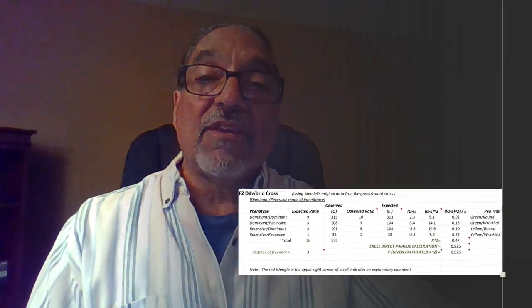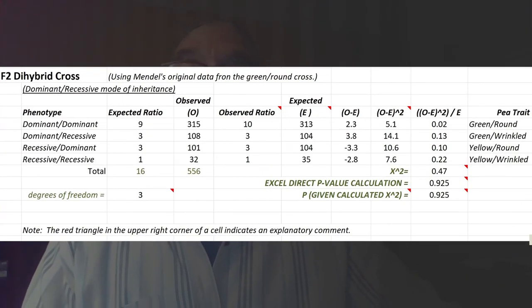We could look at the same basic idea for an F2 dihybrid cross. Here we see the 9:3:3:1. Here are Mendel's actual data. The observed ratio is 10:3:3:1, which gives us the idea that that's not 9:3:3:1. But what is the possibility? How confident are we that this difference between 9 and 10 in the green round seed category is due to chance? If we calculate our chi-squared, the value is 0.47. Our p-value is 0.93. We have a 93% confidence that this difference is due to chance alone. That's pretty good.